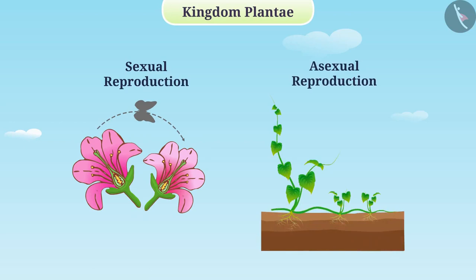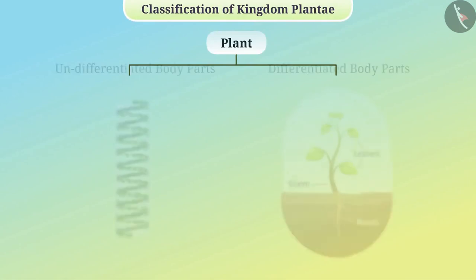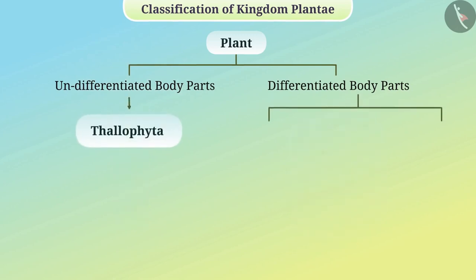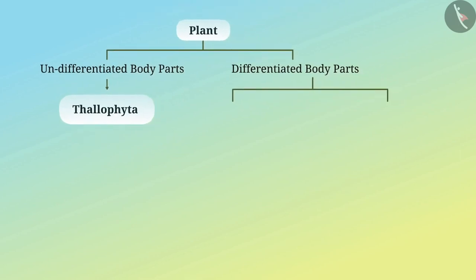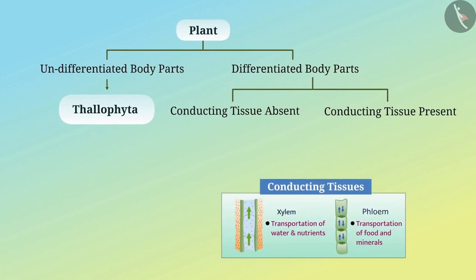Let us now understand the classification of kingdom plantae. The first level of classification is based on whether the major body parts of the plant are fully developed or differentiated. Plants whose bodies are without differentiation are placed in the subclass thallophyta. The next level is made on the basis of whether there are specific tissues for the transport of water and other substances in the body of the plants.